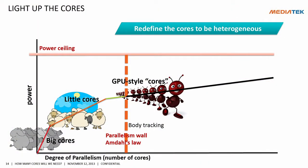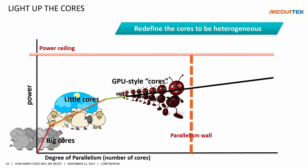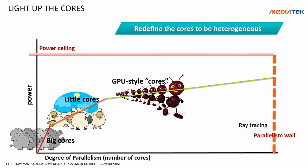Here is the issue. If you think about a workload like body tracking or H.264 encoding, the parallelism wall is right here. But if you think about something like ray tracing, then the parallelism wall gets pushed all the way out. All of a sudden, the cores get lit up. So the funny situation is that we'd be heading to a train wreck if we stick with body tracking, but if we all choose to work on ray tracing, then we are fine.